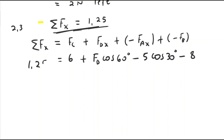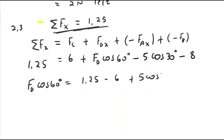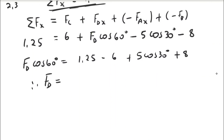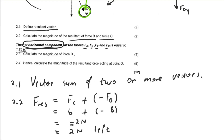Setting up the equation: sigma Fx = 6 + FD cos 60° − 5 cos 30° − 8 = 1.25. Solving for FD cos 60°: FD cos 60° = 1.25 − 6 + 5 cos 30° + 8. Therefore FD equals 15.16 newtons.